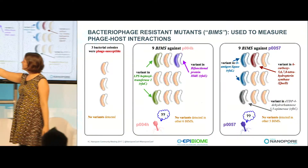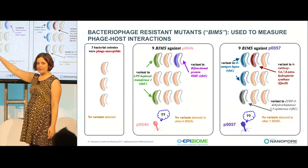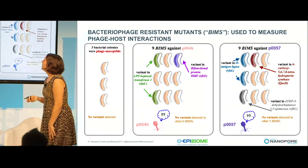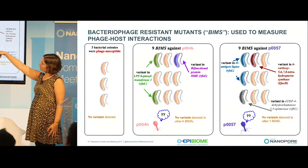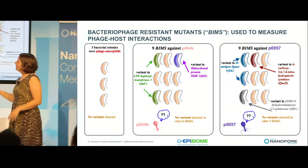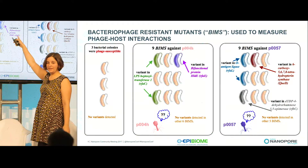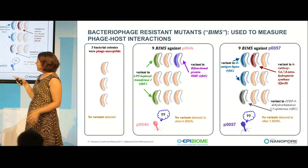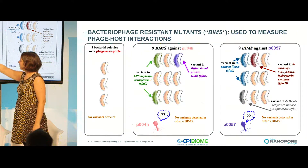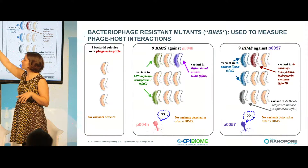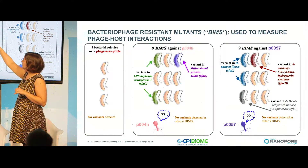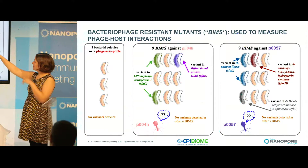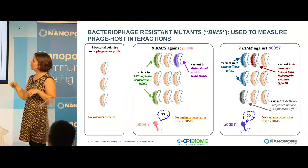The phage-susceptible colonies didn't have any variants, which was expected since I made my assembly from them. When I looked at the phage-resistant ones — I have a set of mutants against two different phages, P004H and P0057 — I started seeing some variants. Some had no variants, but the colored ones have variants in LPS heptosyltransferase, a bifunctional protein, an O-antigen ligase, hydropterin synthase, and dihydrorhamnose.